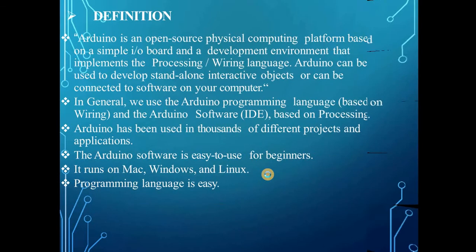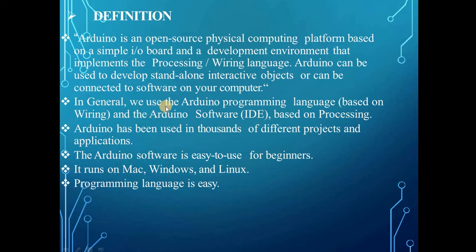The definition of Arduino: it is an open source physical computing platform based on a simple input/output board and a development environment that implements the processing language. The Arduino programming language and software are based on processing. It has been used in thousands of different projects and applications. The Arduino software is easy to use for beginners and runs on Mac, Windows, and Linux operating systems.